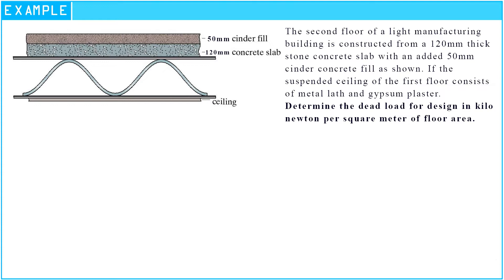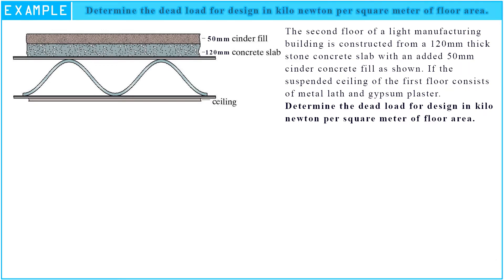The second floor of a light manufacturing building is constructed from a 120 mm thick stone concrete slab with an added 50 mm thick cinder concrete fill. If the suspended ceiling of the first floor consists of metal lath and gypsum plaster, determine the dead load for design in kN per square meter of floor area.